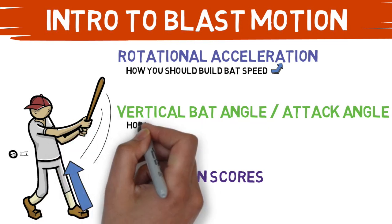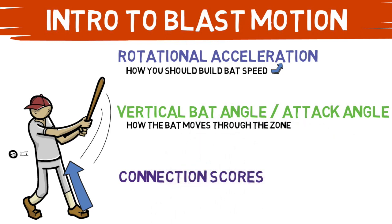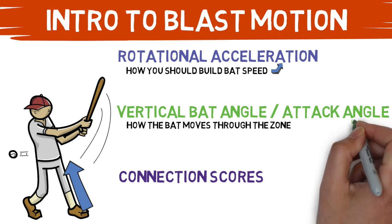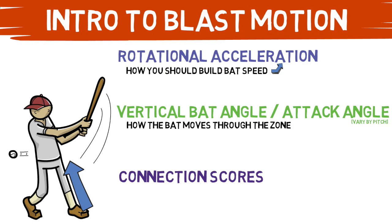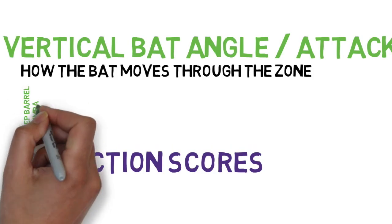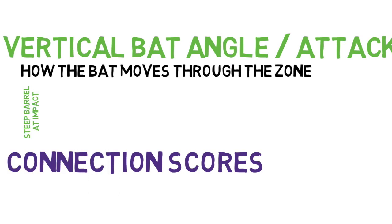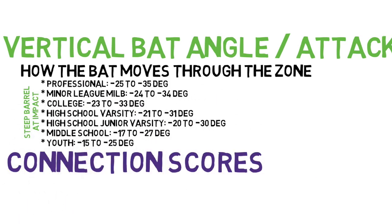Then there's your vertical bat angle and your attack angle. Technically these are two metrics, but they help paint a better picture of how the bat moves through the zone. This is a different metric because it actually varies on each pitch. You should have different angles depending on different pitch types and different locations, and also depending on the level of play you're currently at. Here's a quick breakdown of where your vertical bat angle and your attack angle should be for each level of play.